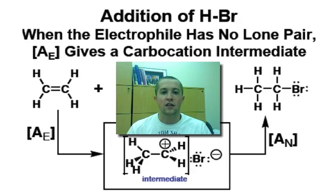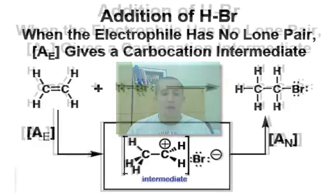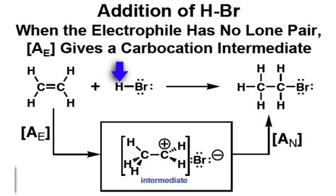In the previous webcast, we took a look at the electrophilic addition of HBr to the double bond of ethene. Since our electrophile, the hydrogen of hydrogen bromide, does not have any lone pairs associated with it, we know that the first step will be an AE step in which a carbocation intermediate is generated, followed by a nucleophilic association step where the bromine's non-bonding lone pair donates into the empty p orbital of our carbocation intermediate.